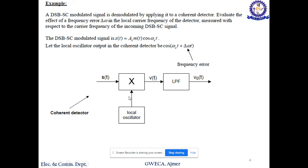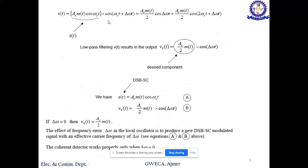The DSB-SC signal is given by Ac m(t) cos(ωc t). Let the local oscillator output be cos[(ωc + Δω)t], where Δω is the frequency error produced by the local oscillator. The output of V(t) is given by s(t) multiplied by local oscillator output, means Ac m(t) cos(ωc t) multiplied by cos[(ωc + Δω)t]. After solving this using 2 cos A cos B identity, we get two terms. The higher order term can be neglected when passing through the low-pass filter. We will get Vo(t) = (Ac/2) m(t) cos(Δωt).